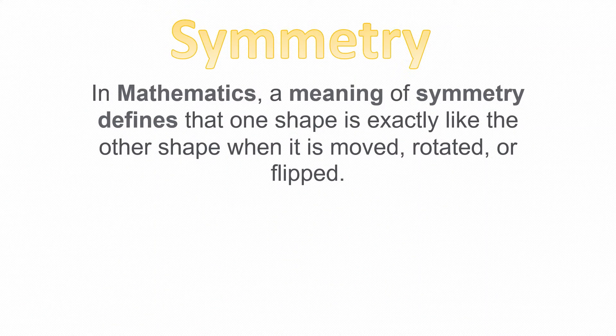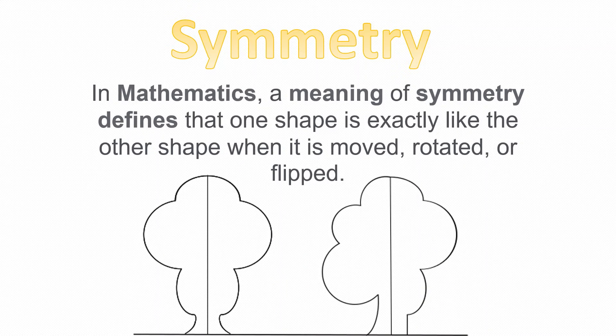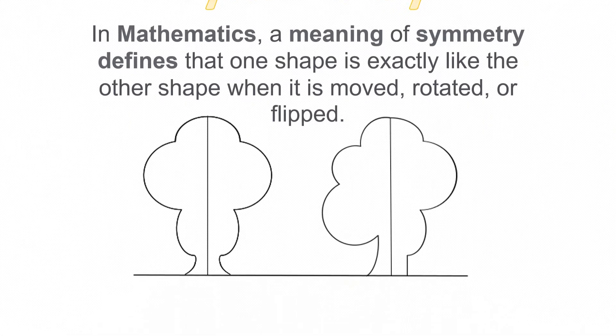Let's understand what is symmetry. In mathematics, symmetry means that one shape is exactly like the other shape when it is moved, rotated, or flipped. If you take an example of a tree, the tree on the left hand side is symmetrical because when we draw a straight vertical line from the center, we can see the exact shapes on both the sides, even if this tree is rotated, moved or flipped. Whereas the tree on the right hand side is asymmetrical or non-symmetrical because both the sides of the tree are not the same. So, this is symmetry.